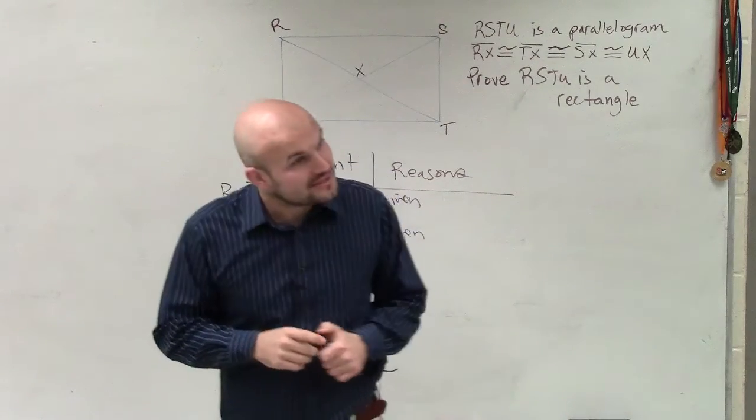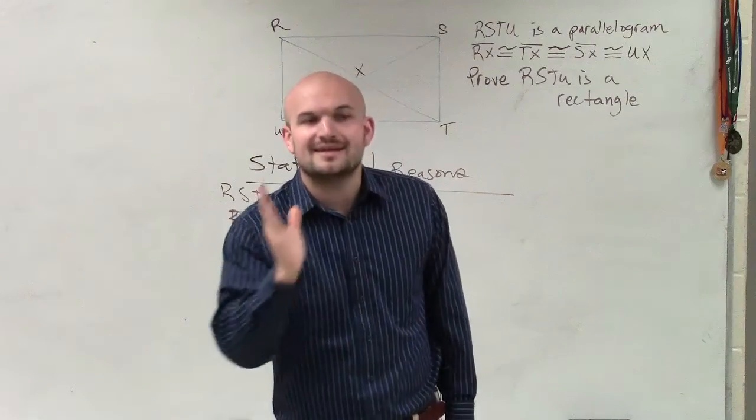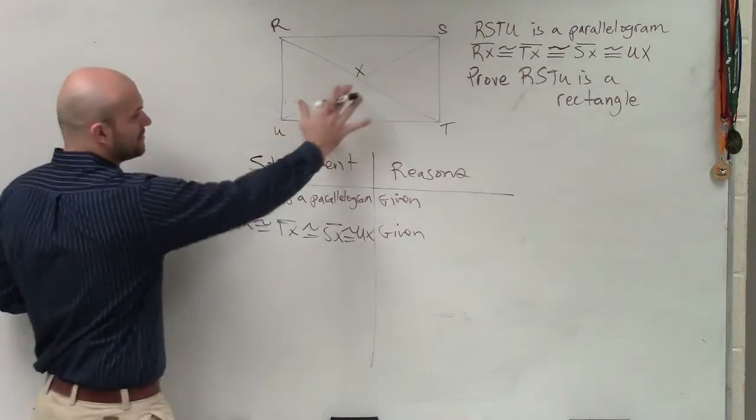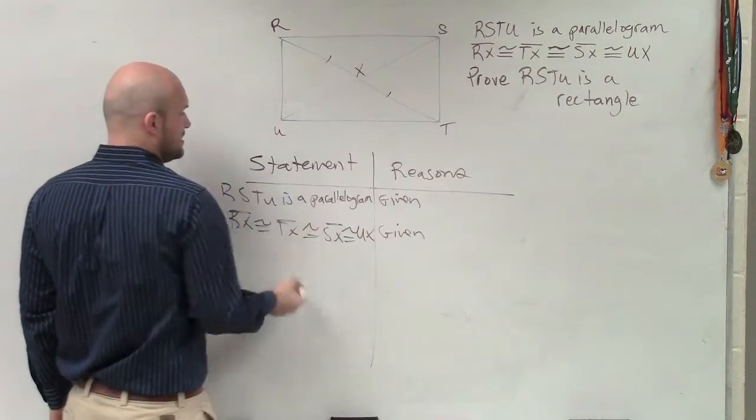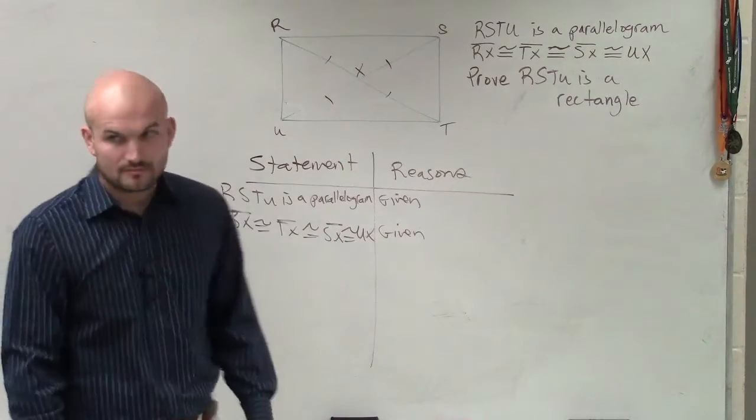Diagonals bisect each other. Diagonals bisect each other, but parallelograms bisect each other. Something else. Yes, the diagonals are equal in measurement. Now, let's go and look at what we have here.